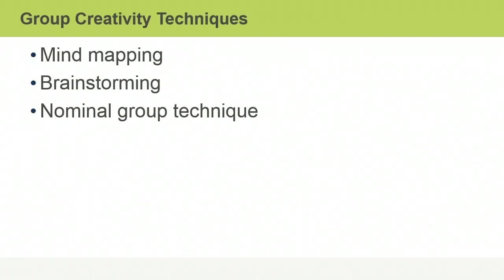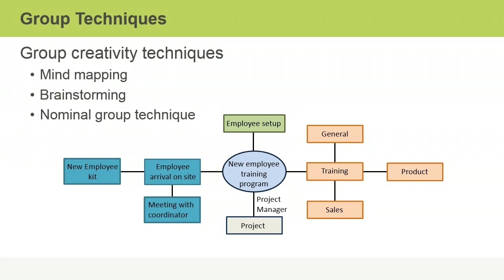Another important class of techniques are group creativity techniques. They include mind mapping, brainstorming, and nominal group technique. A mind map is useful because it brings together a lot of ideas and groups them visually to make it clear how they relate or differ. At the center of the map is the problem to be solved. As you think of ideas, you build branches out from the center — each branch groups related ideas, and at the end of each branch you get to specific ideas that develop from more general ones.